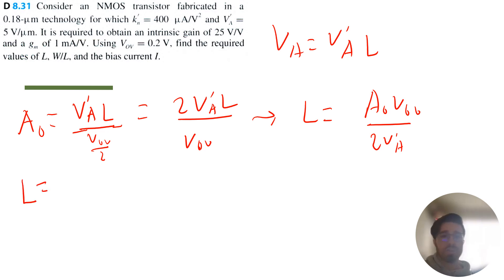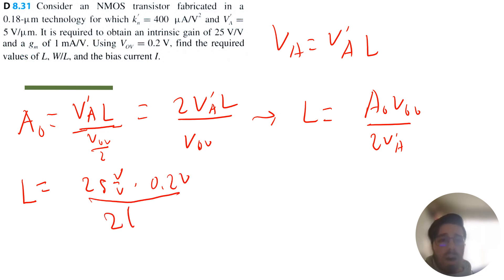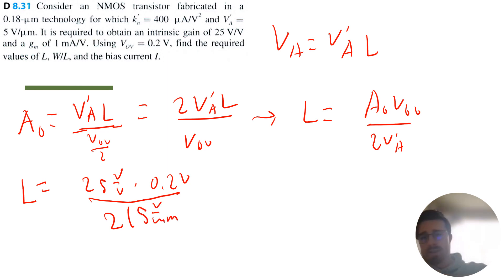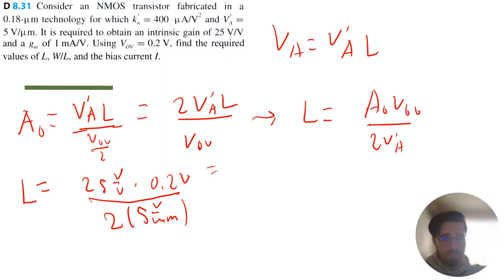Continuing with this calculation, L equals 25 volts per volt times V overdrive of 0.2 volts, divided by 2 times VA' of 5 volts per micrometer, which gives L equals 0.5 micrometers.